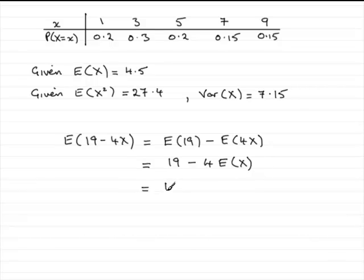So we've got the 19 minus 4. What is the expected value of x? Well, it's 4.5. So you've just got to put 4 times 4.5 there. Work that out on the calculator. And what you get is 1.